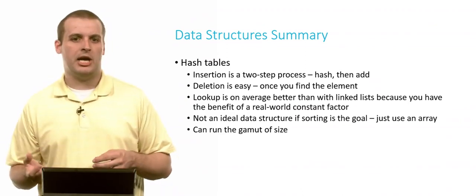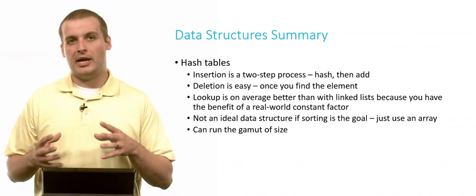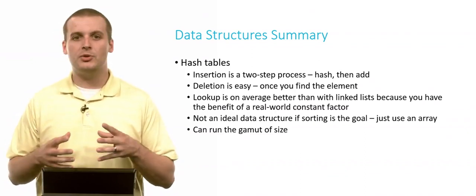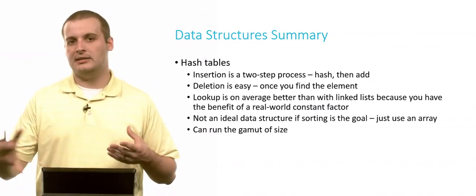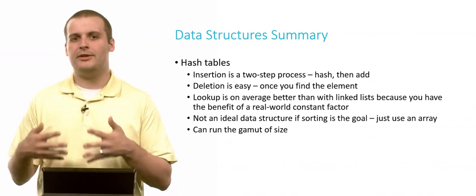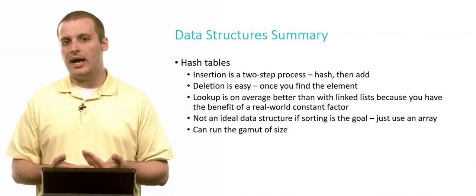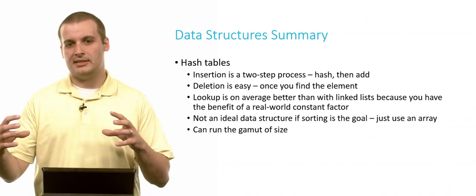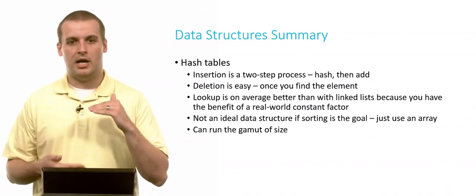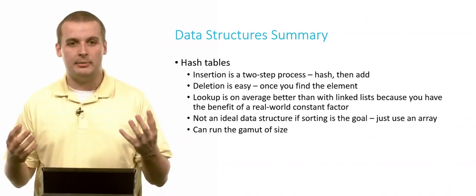Now, lookup is where things get a little more complicated. So it's on average better than linked lists. If you're using chaining, you still have a linked list, which means you still have the search detriment of a linked list. But because you're taking your linked list and splitting it over 100 or 1,000 or n elements in your hash table, your linked lists are all 1/nth the size. They're all substantially smaller.